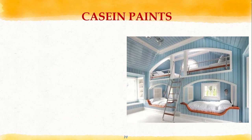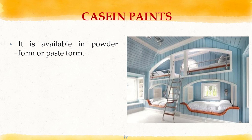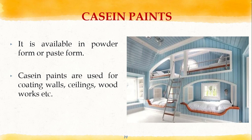Next are casein paints. Casein is a protein available in milk and curd. It is mixed with white pigments to get casein paint, which is available in powder or paste form. Colored pigments can be added to get the required color. Casein paints are used for coating walls, ceilings, and woodworks, but for exterior use, the paint should be mixed with dryers.